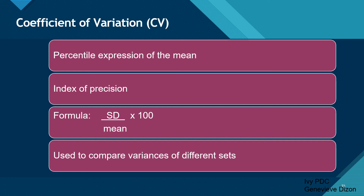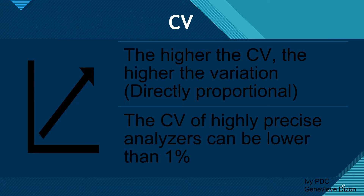The last measurement of dispersion is coefficient of variation (CV). This gives a percentile expression of the mean and is an index of precision. The formula is the standard deviation divided by the mean, multiplied by 100. This is used to compare variances of different sets. For interpretation, the higher the CV, the higher the variation — they are directly proportional. For chemistry, the CV of highly precise analyzers can be lower than 1; the lower the CV, the better, meaning the analyzers are more precise.